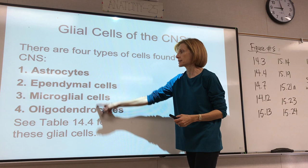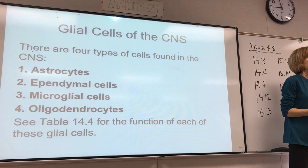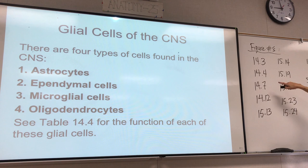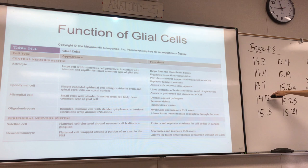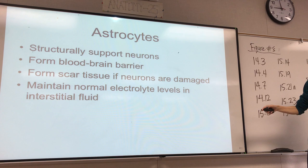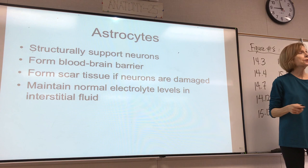In the CNS, there are four neuroglial cells. I would like you to know what they do and be able to identify these — you'll be identifying these in figure 14.7. This is a table that puts them all together with their functions for a quick reference, but let's go through these and then take a look at what they look like.